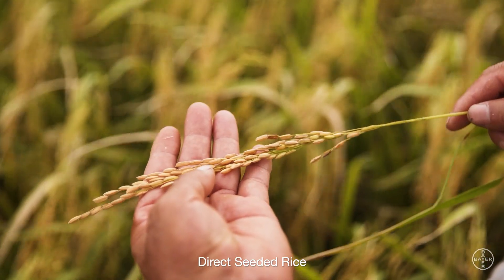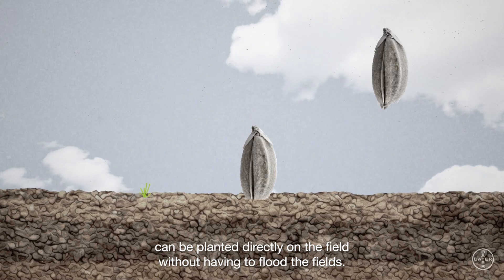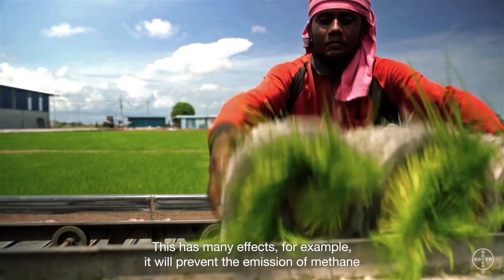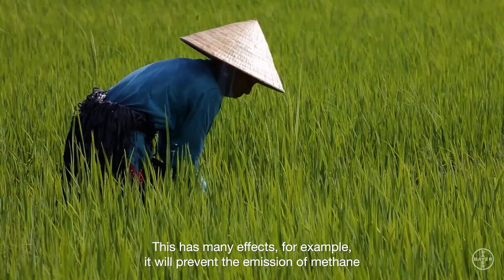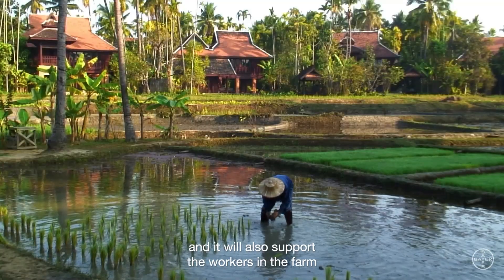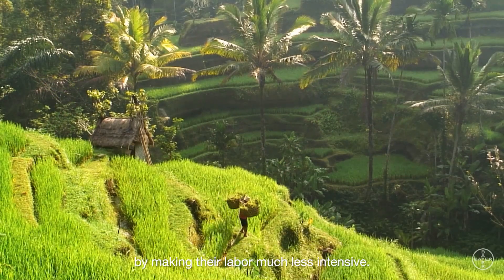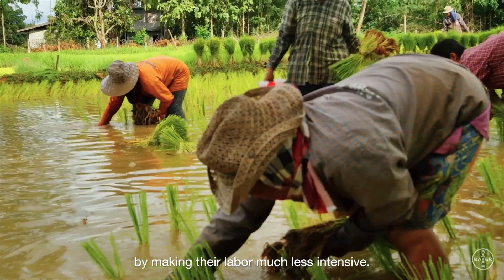Direct seeded rice can be planted directly on the field without having to flood the fields. This has many effects, for example, it will prevent the emission of methane, and it will also support the workers in the farm by making their labor much less intensive.